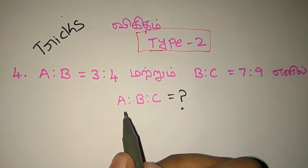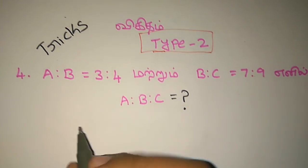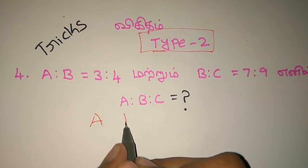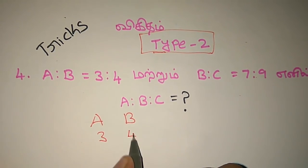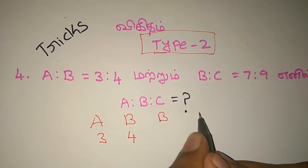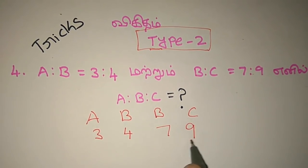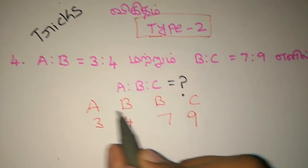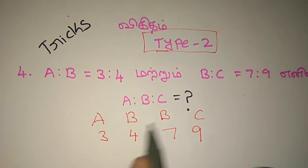A, B, C — how do we solve these three? Look, A to B is 3 to 4. Now if we pass A to B to C, let's say B to C is 7. How do we solve the number which is 3 to 4?